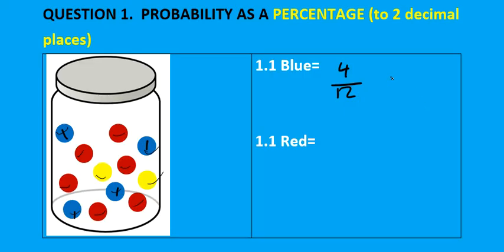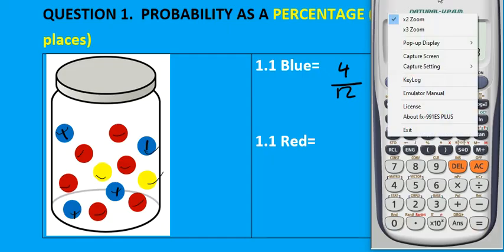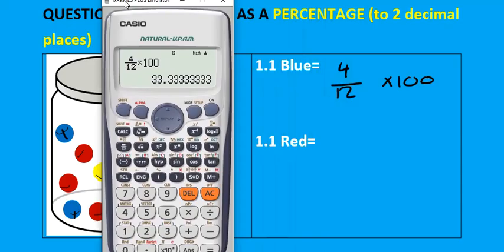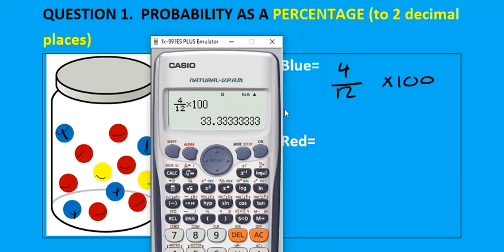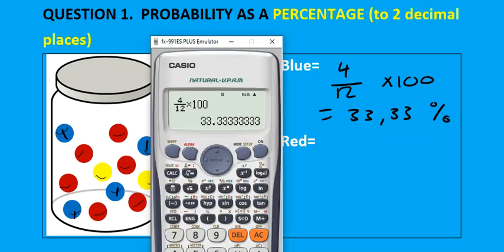We are asked to write this probability as a percentage, so we multiply by 100. Take 4 over 12, all multiplied by 100 on your calculator. That will give you 33.33 percent, and we have to round this to two decimal places, so the answer is 33.33 percent.